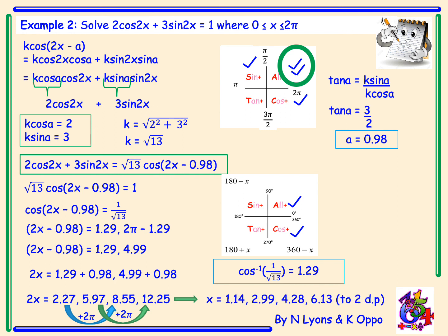The final step is we will need to divide all of them by 2, and x is equal to 1.14, 2.99, 4.28, and 6.13 to 2 decimal places.